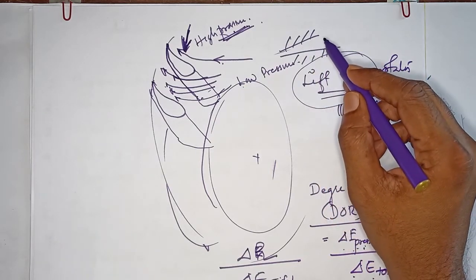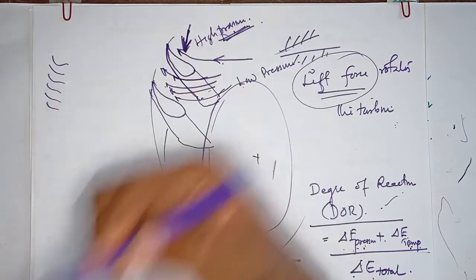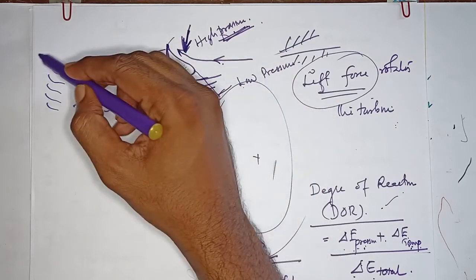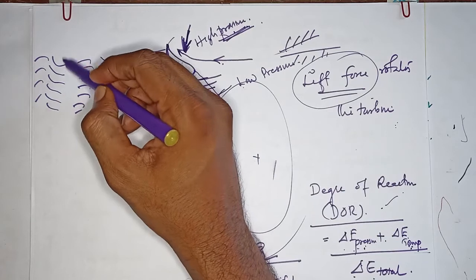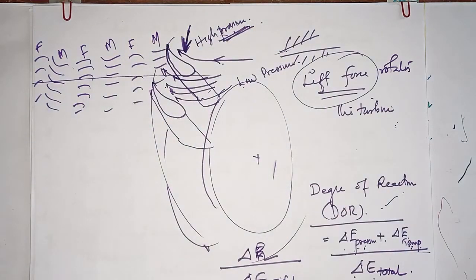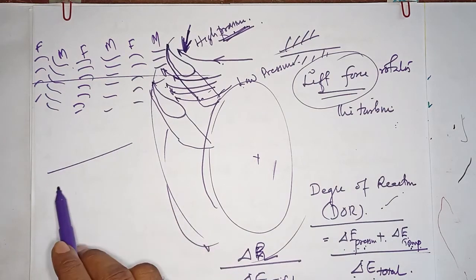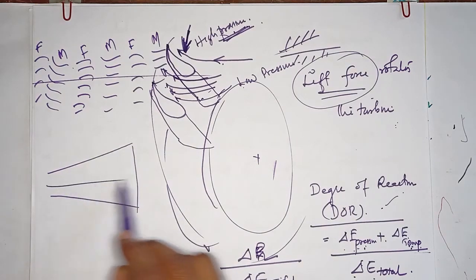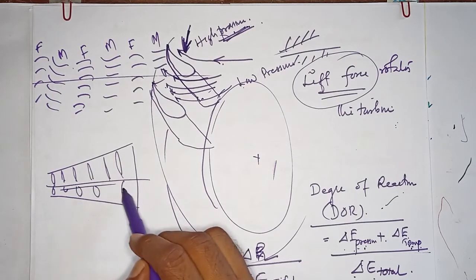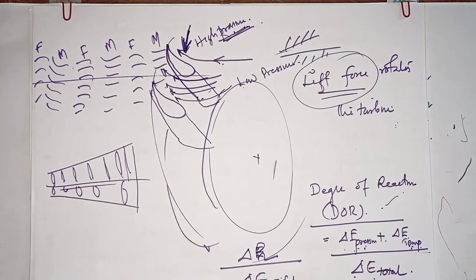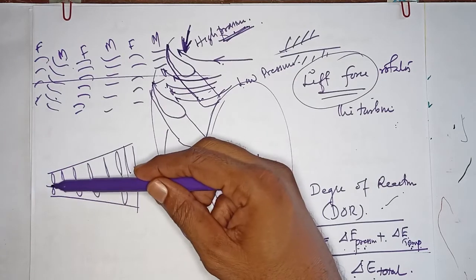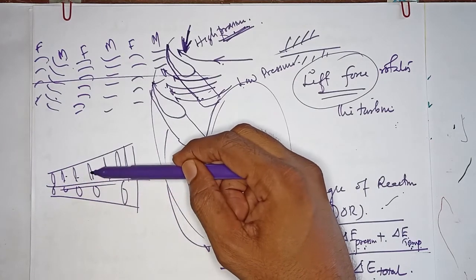In the reaction turbine, there are rows of fixed blades and moving blades arranged alternately: fixed blade, moving blade, fixed blade, moving blade, and so on. This arrangement is continuous. In the impulse case, we have a nozzle followed by moving blades. The fixed blades and moving blades are set on the shaft, and this arrangement continues along the turbine.